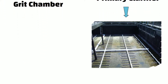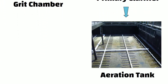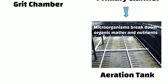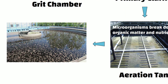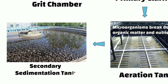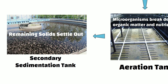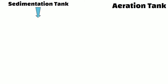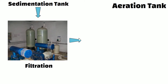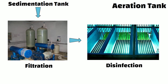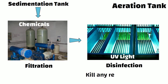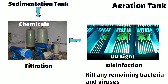Then it is transferred to aeration tanks where microorganisms break down organic matter and nutrients in the water. The water is then passed through a secondary sedimentation tank where any remaining solids settle out. The final treatment stage involves filtration and disinfection, where the waste water is treated with chemicals or UV light to kill any remaining bacteria and viruses.